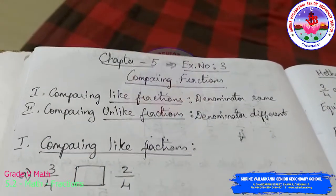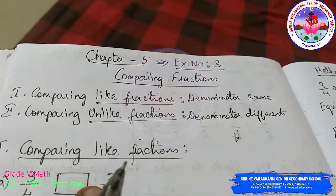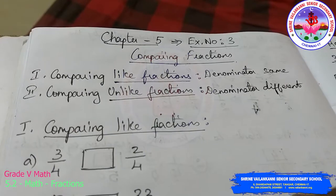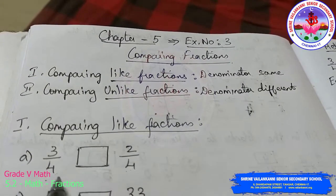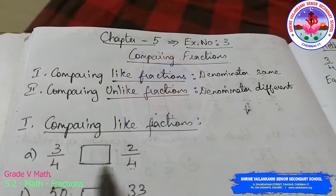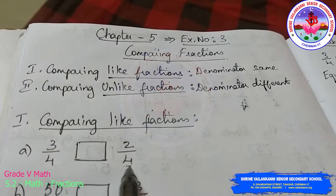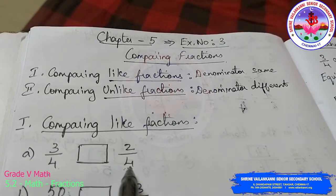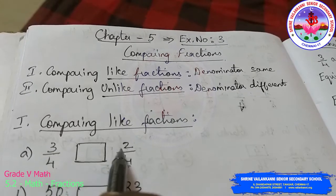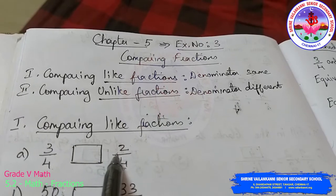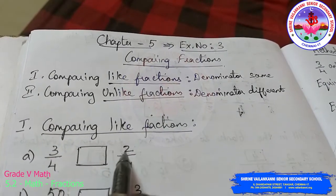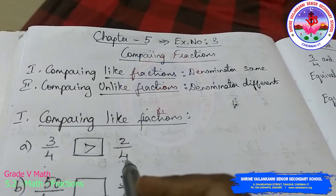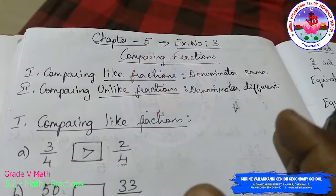I am taking two fractions to show you. First we will see how to compare like fractions. Like fractions have the same denominator — for example, 3/4 and 2/4. These two denominators are the same. When comparing like fractions, you can just compare the numerators to conclude which is bigger and which is smaller. Here, 3 is greater than 2, so 3/4 is greater than 2/4. In just one step it is completed.